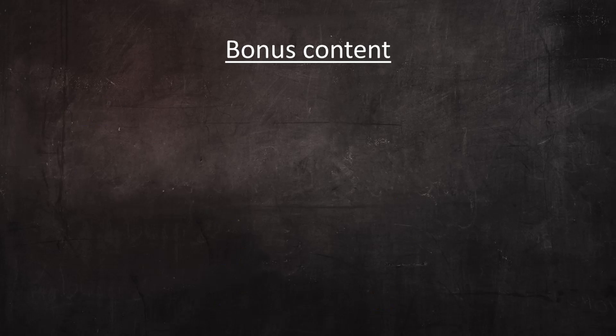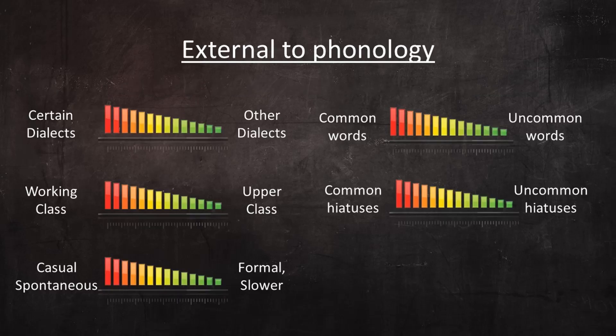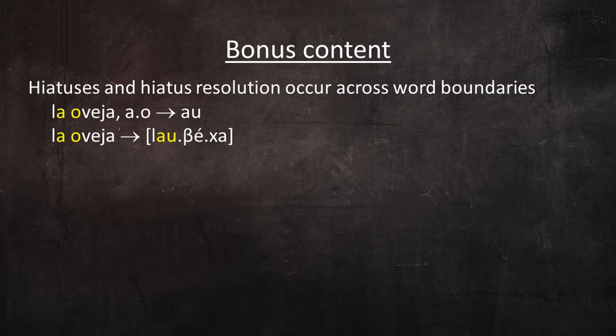Just like all Spanish phonological rules, hiatuses and hiatus resolution occur across word boundaries. For example, in la oveja, the A and O constitute a hiatus that might resolve to an AO diphthong depending on various factors: la oveja → la oveja. But in la obra, that exact same AO hiatus wouldn't resolve because the spoken stress falls on the O. Such cross-word hiatuses follow exactly the same principles already discussed for hiatuses within words.